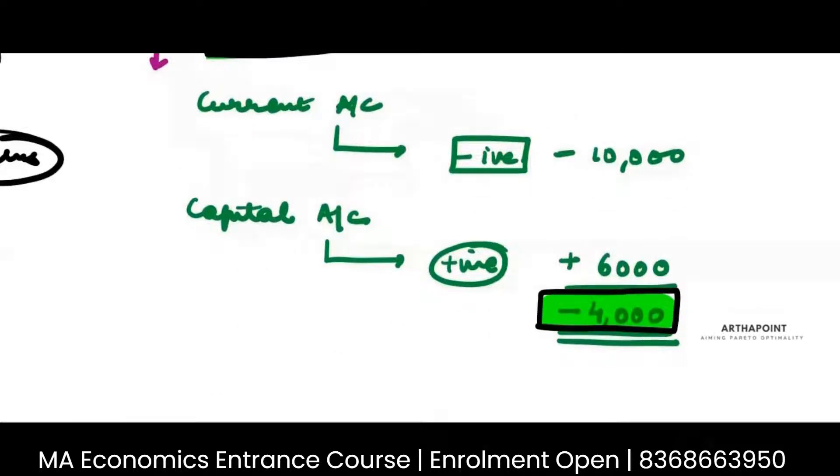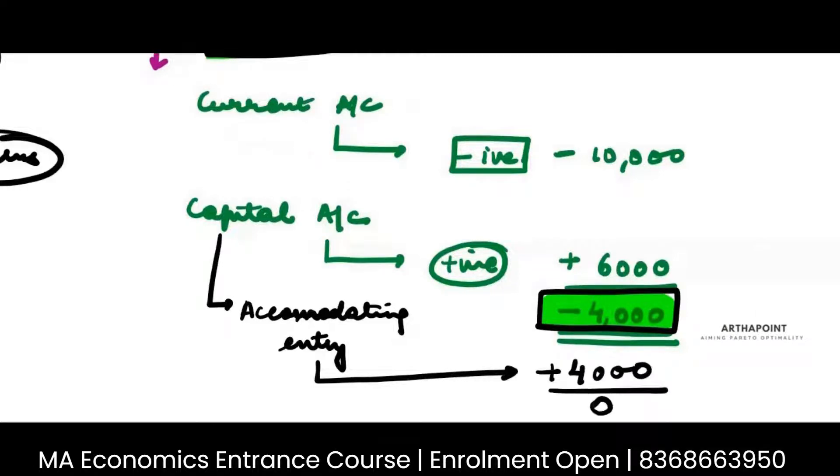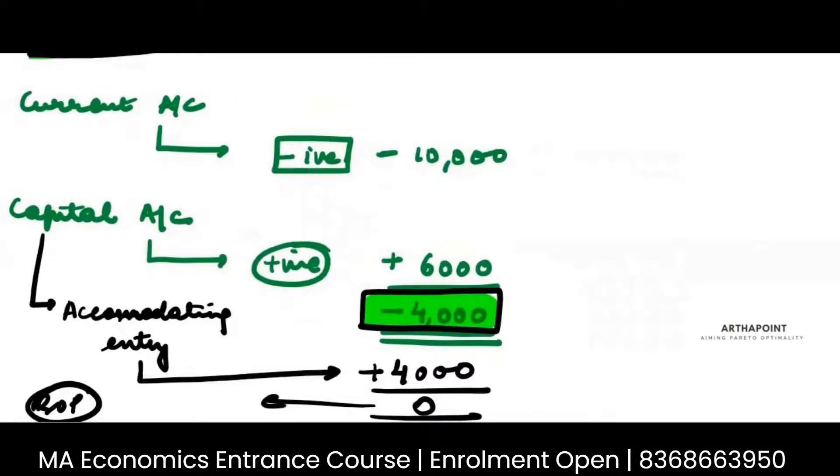So if we have to take care of this 4,000, then actually within the capital account, we also go ahead and pass something which is known as an accommodating statement. This accommodating entry is passed for positive 4,000 such that the final balance of payment comes out to be zero. Now what does this mean? What does this 4,000 mean? Why is it positive?